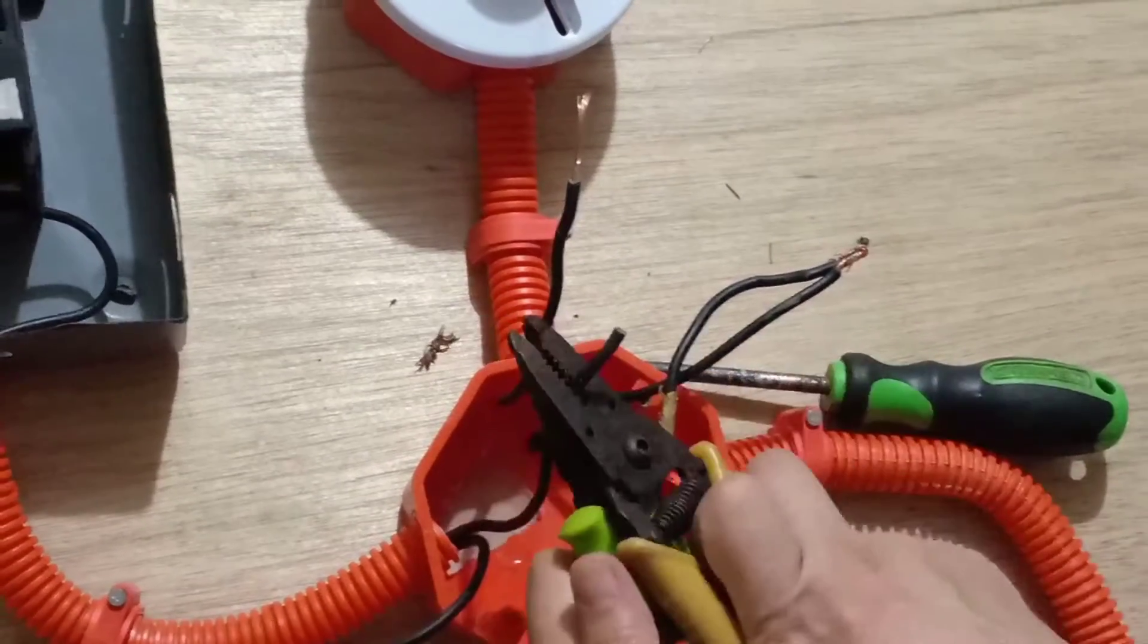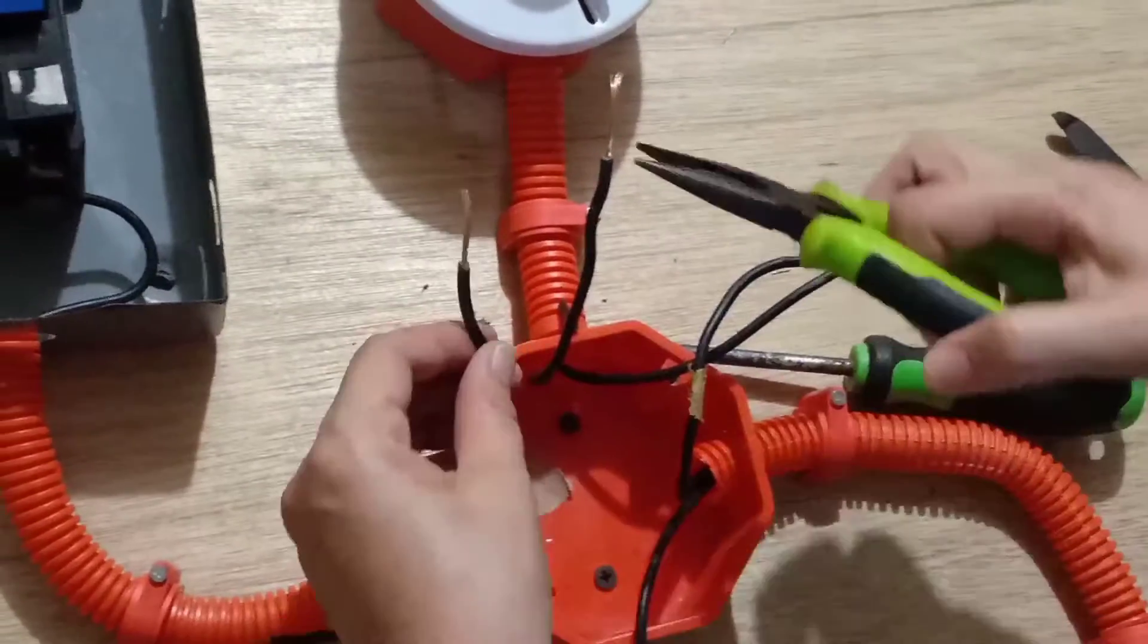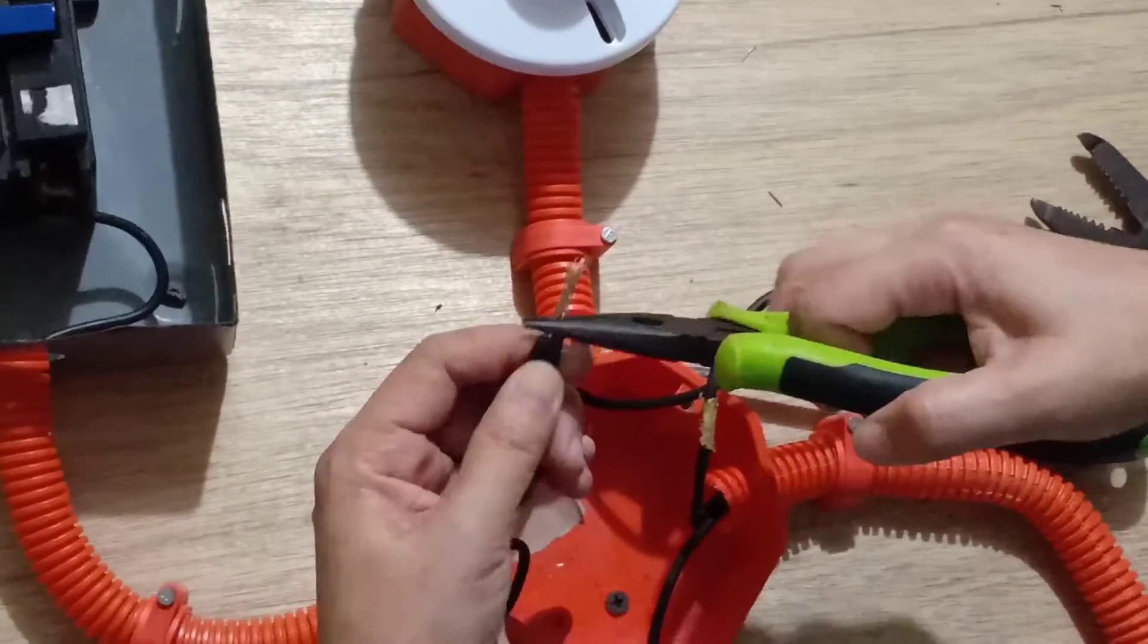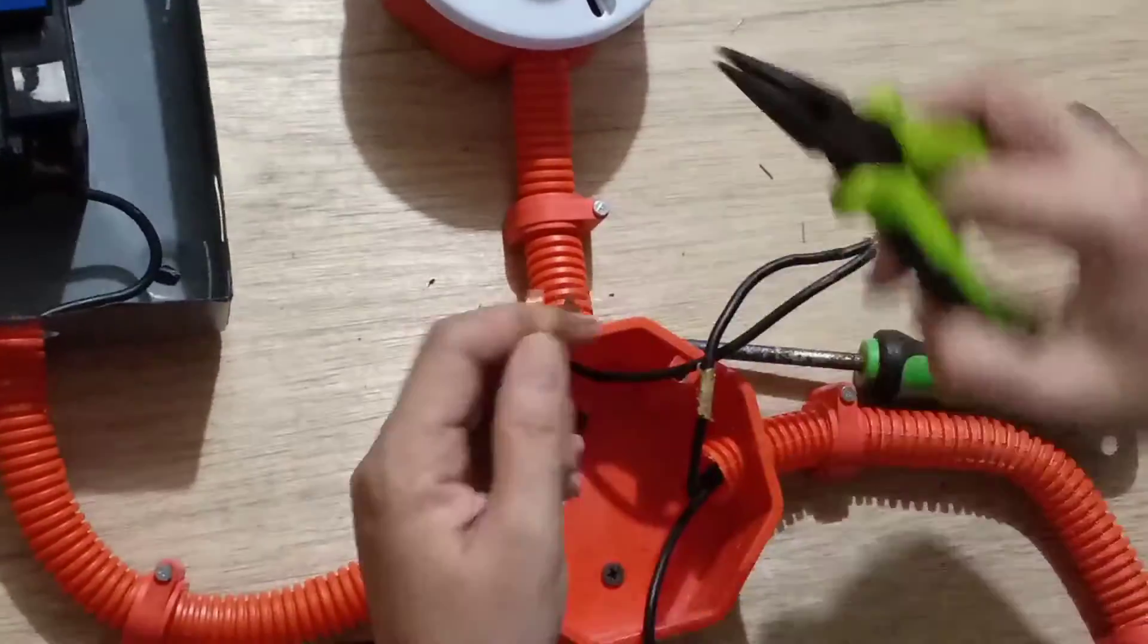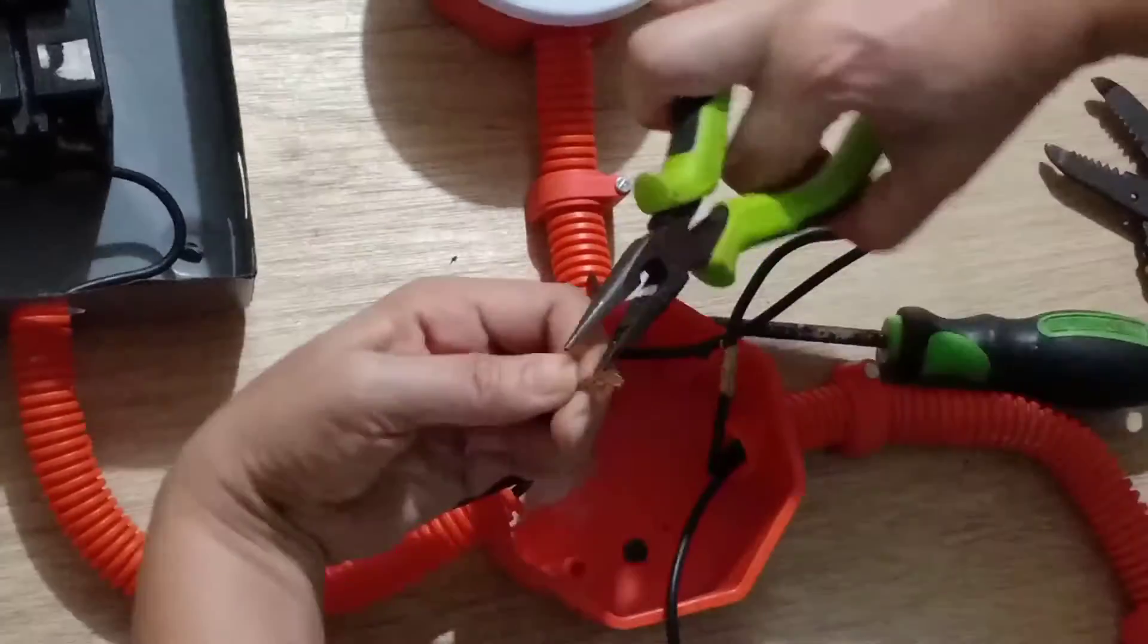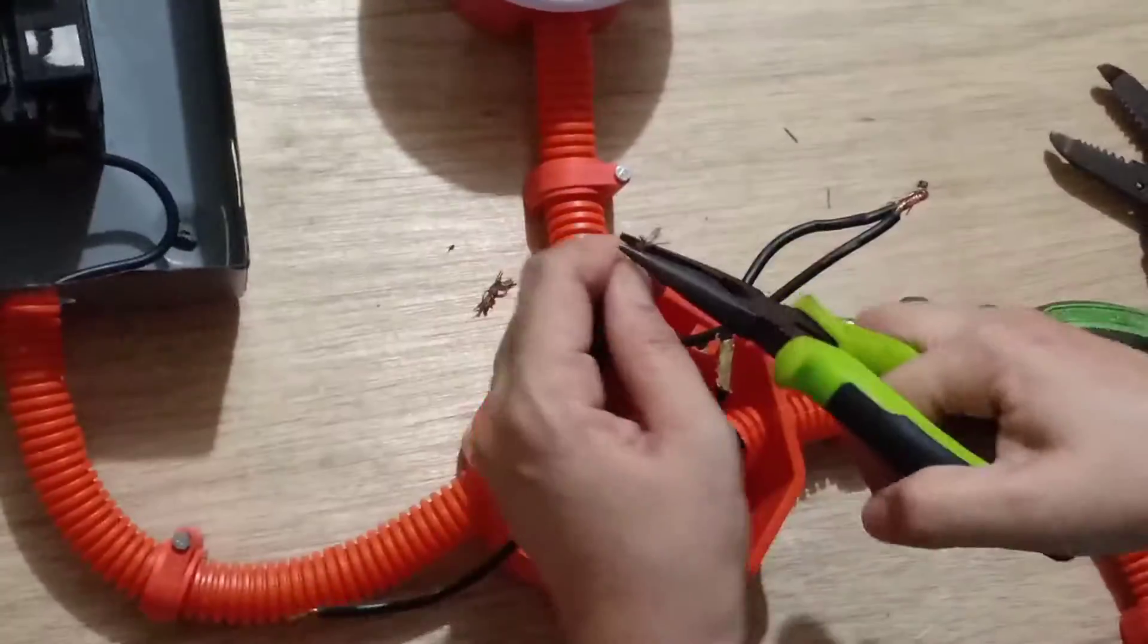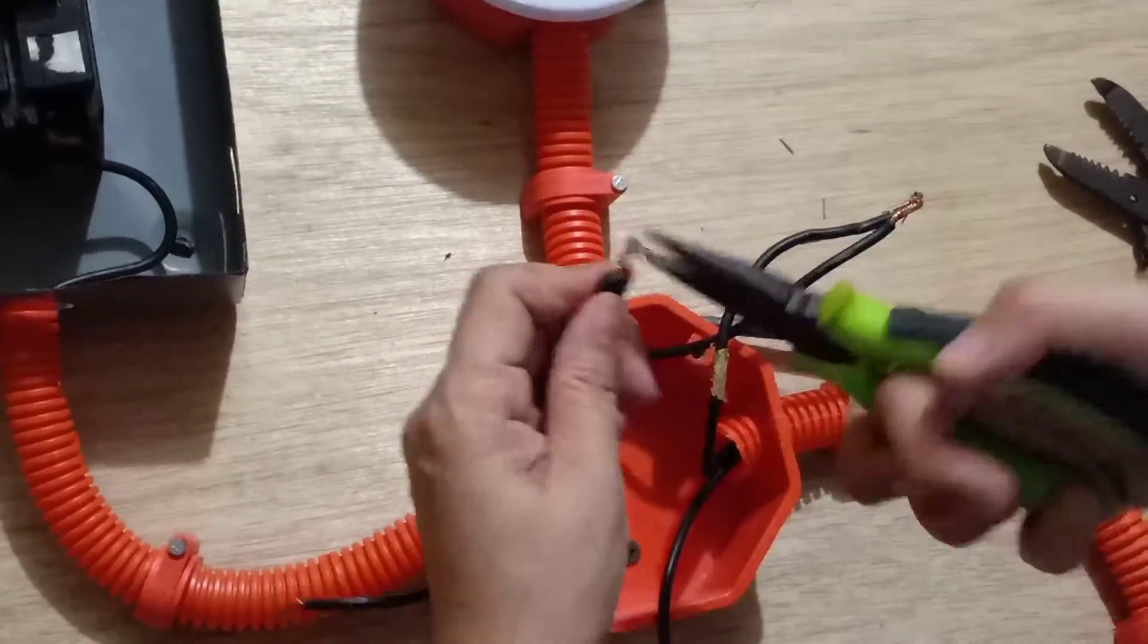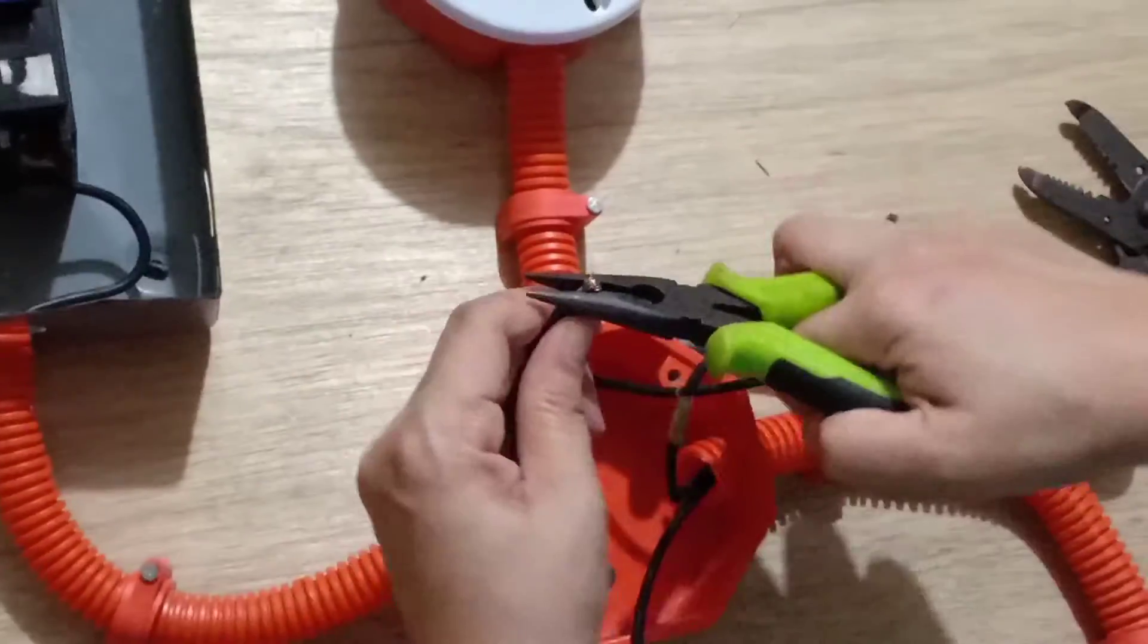So I remove the copper insulation and twist the wire and twist the wire again. So make sure that the wires are fully connected and secured.